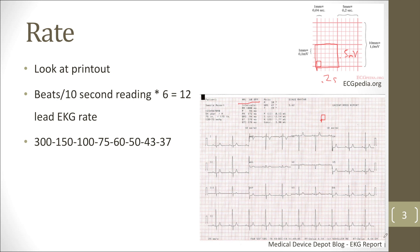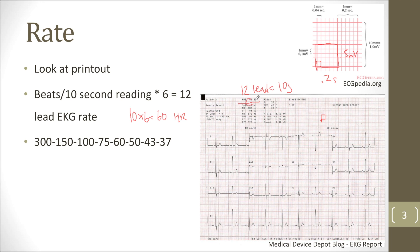In each of these EKG strips — this is a 12-lead EKG — it's going to be 10 seconds. That means there's going to be 50 big boxes, because 50 times 0.2 is 10 seconds. The easiest way to calculate the rate is to figure out how many beats there are in the 10-second reading, then multiply by 6 because 10 times 6 is 60 seconds. So if you have 10 beats within the 10-second reading, that's 10 times 6 equals a heart rate of 60. And we'll see here that the heart rate is in fact 60.